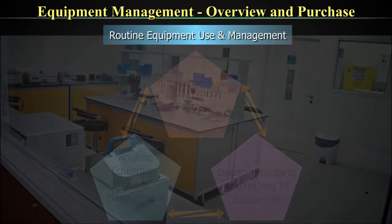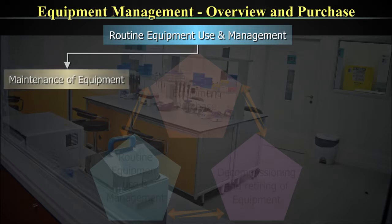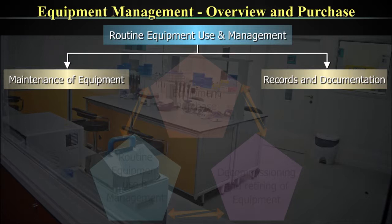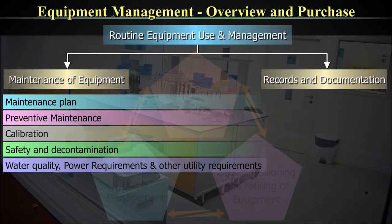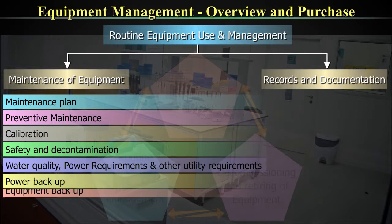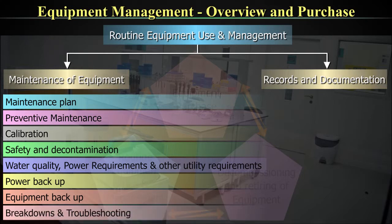The second larger component is routine use and maintenance of equipment, which holds multiple sub-components. To reiterate, routine use and maintenance includes: maintenance plan, preventive maintenance, calibration, safety and decontamination, water quality, power requirements and other utility requirements, power backup, equipment backup, and breakdowns and troubleshooting. We will take these concepts one by one in later videos.